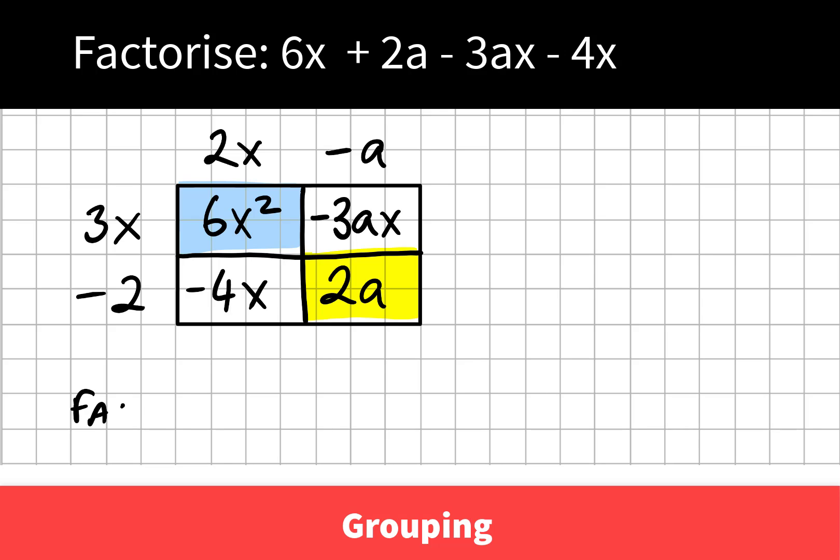So we would write down our answer. Our factors are 2x minus a times 3x minus 2.